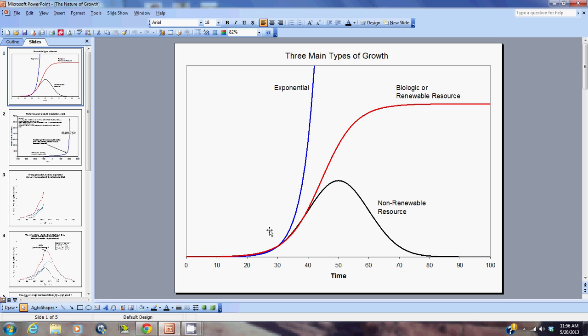That leads us to the second type of growth that we would typically see, which is an S-shaped type curve, which is a biologic or renewable resource type of growth curve. This type of growth curve can characterize things like the growth of biological species like rabbits, deer, plant life, and typically it characterizes things that live in a finite world but can renew themselves.